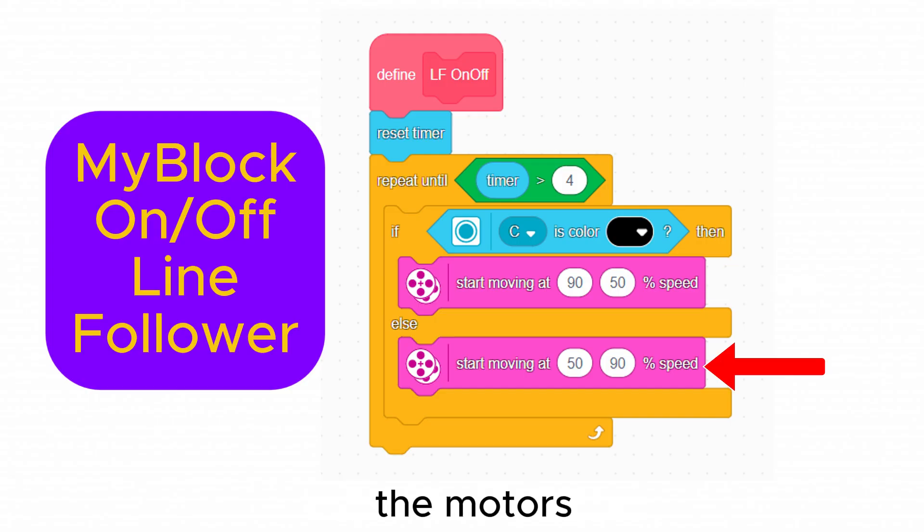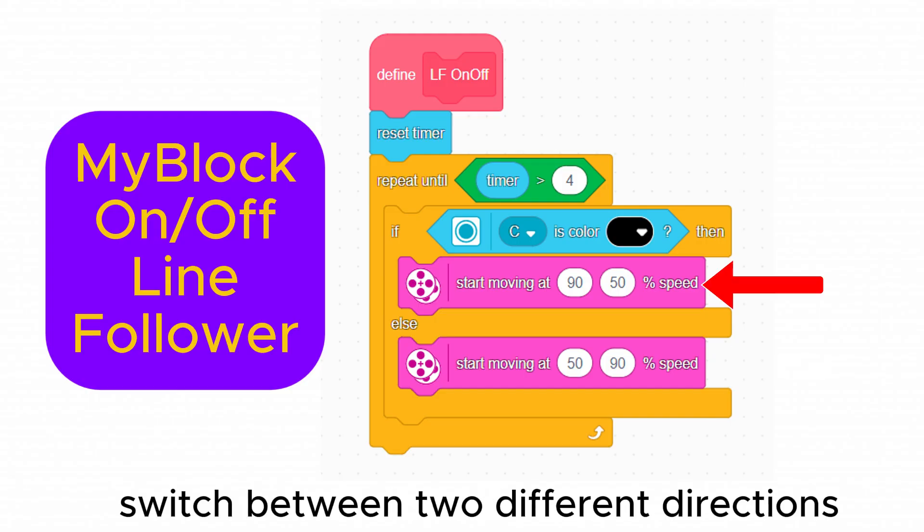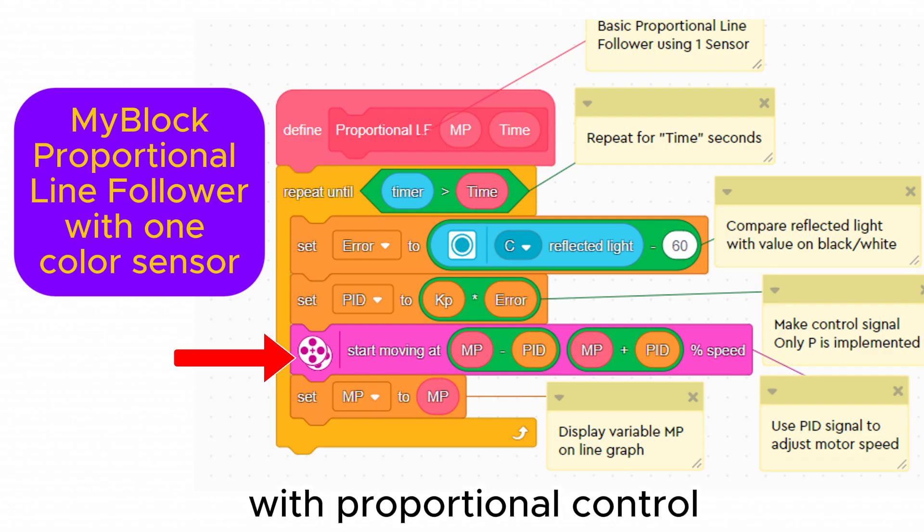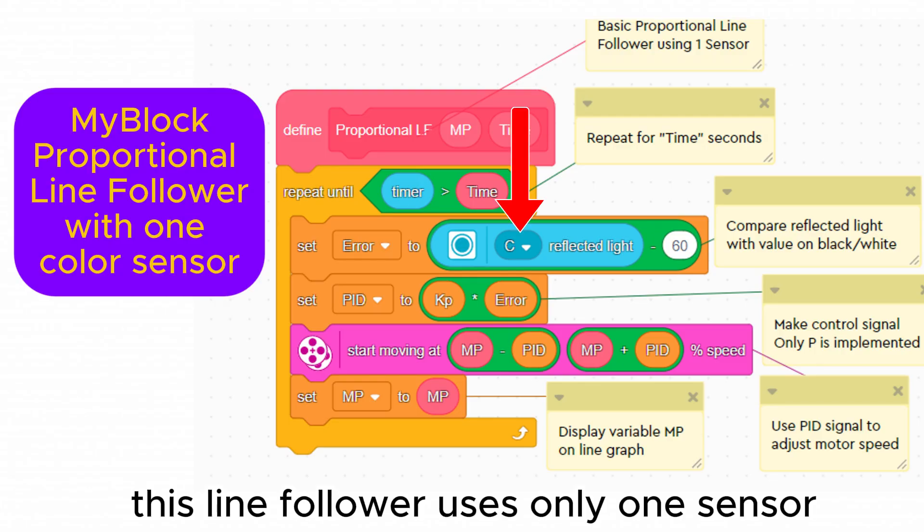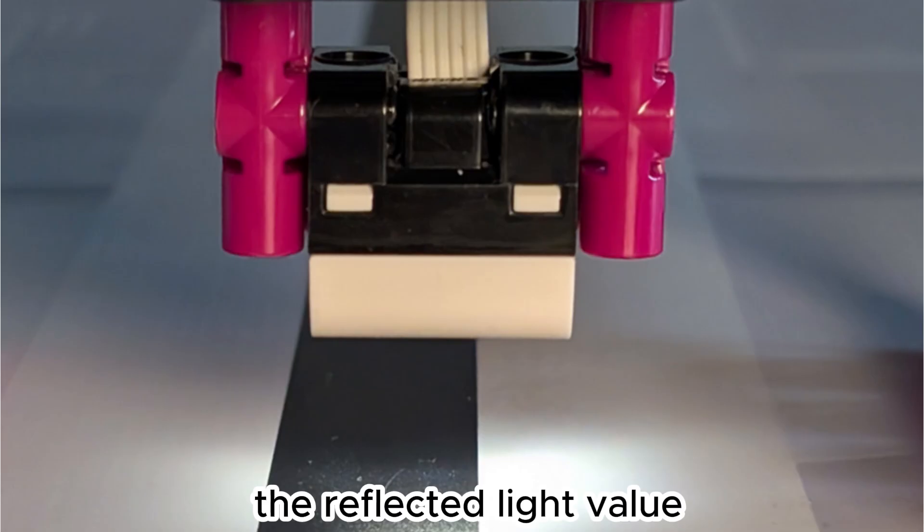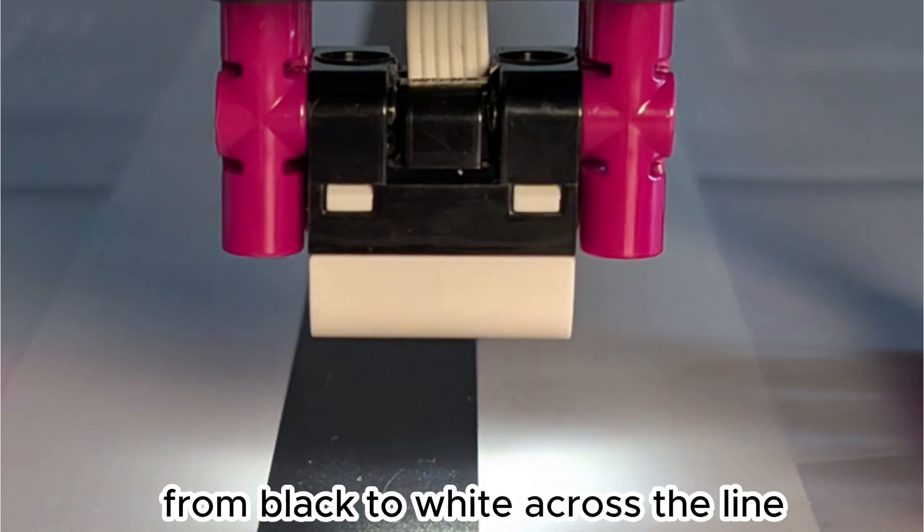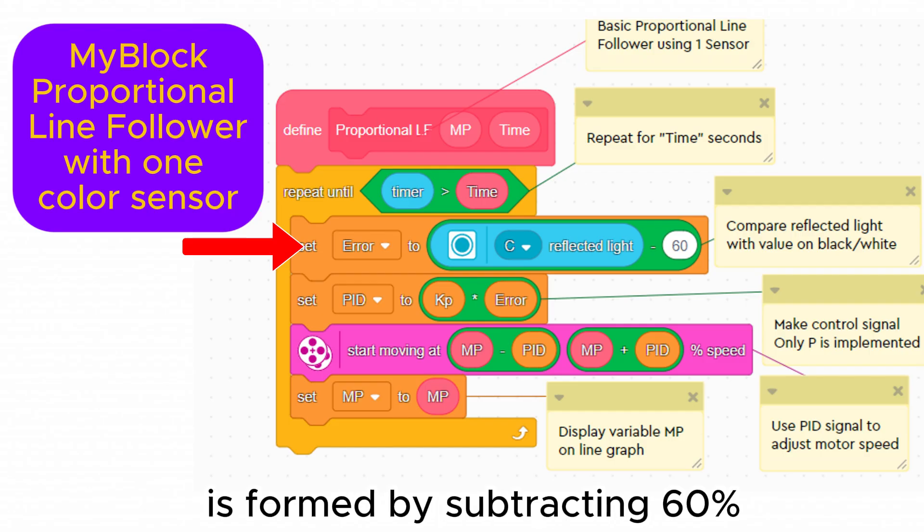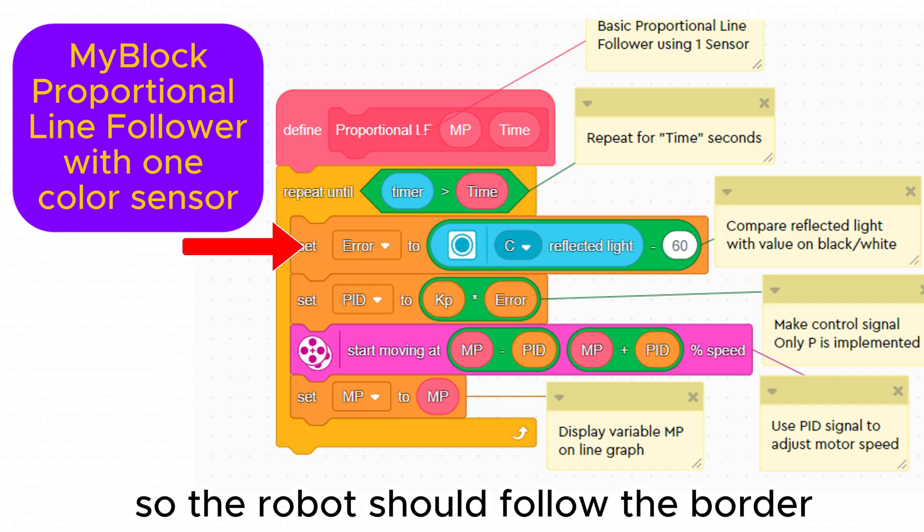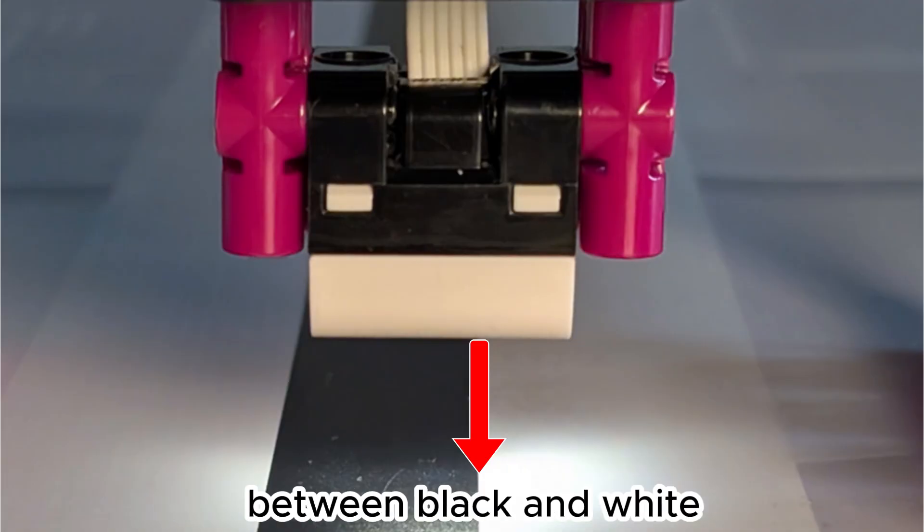With on-off control the motors switch between two different directions to follow the line. With proportional control the speeds of the two motors are smoothly adjusted. This line follower uses only one sensor. The reflected light value varies from about 30% to 90% from black to white across the line. The error signal is formed by subtracting 60% from the sensor signal so the robot should follow the border between black and white.